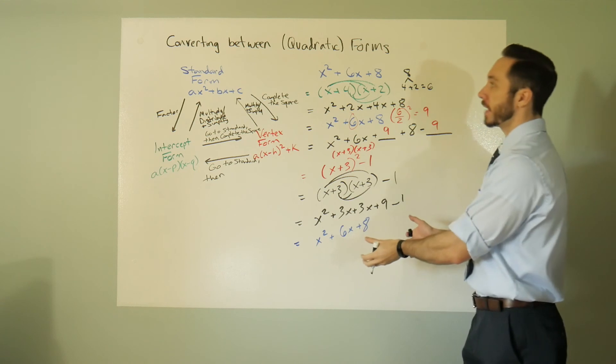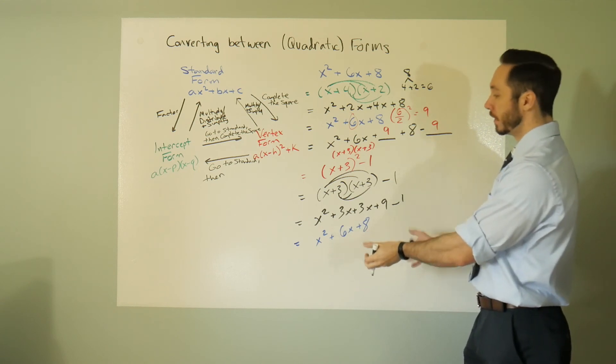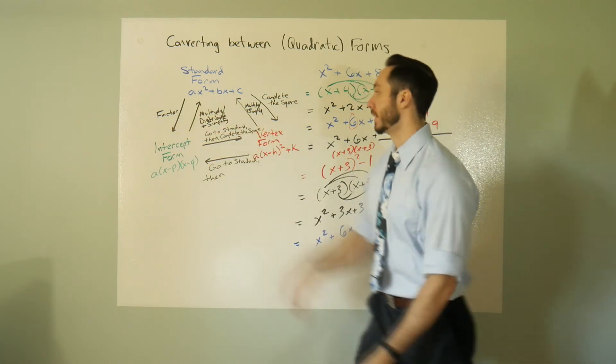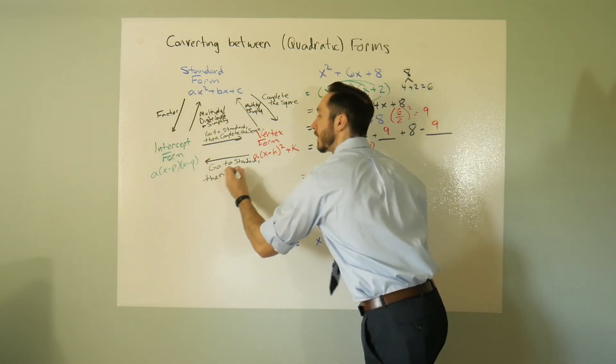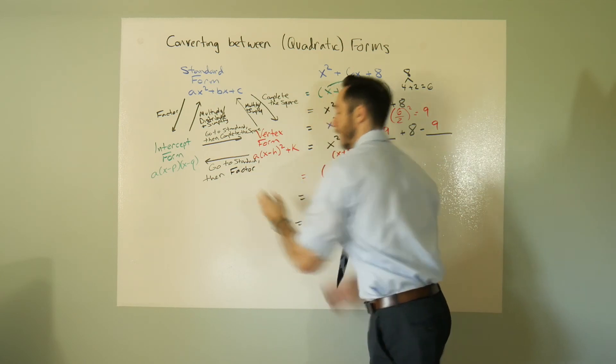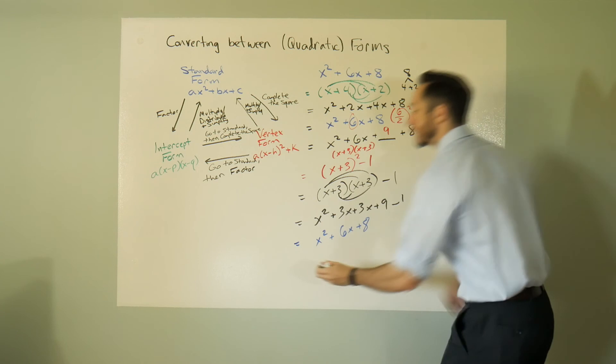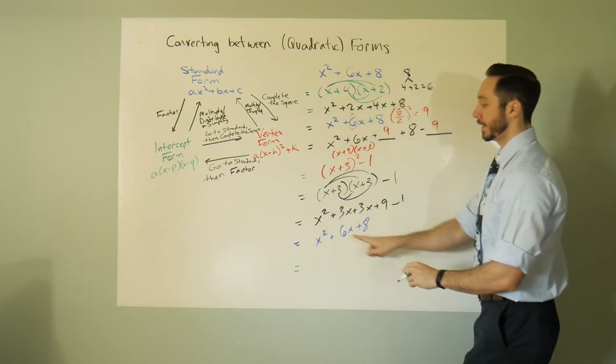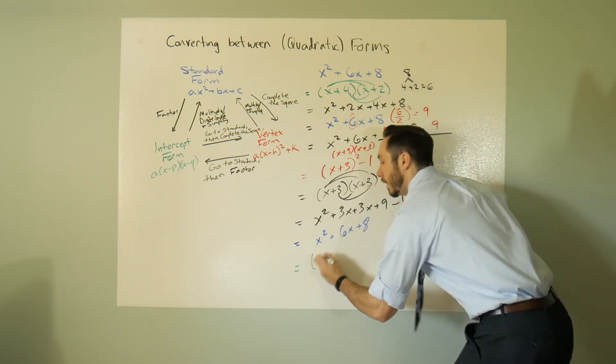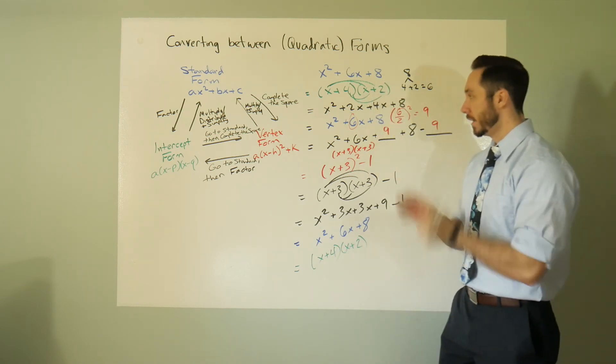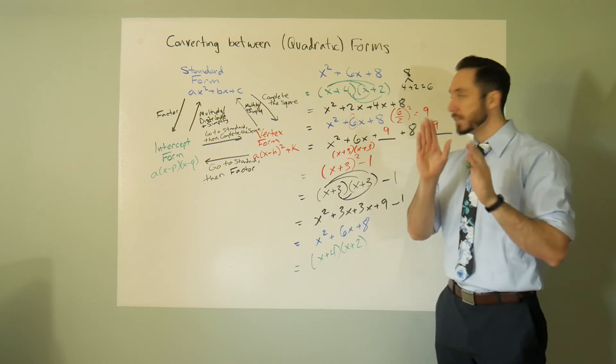So I am in standard. How would I then get it into intercept? I would factor. Then factor. So factoring this out, what two numbers multiply to 8 adding to 6? x plus 4, x plus 2, which is what we had up here.